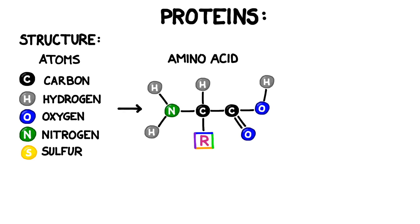These atoms arrange themselves into something called an amino acid, which looks like this. Notice how one of the carbons has an attachment called an R group. There are actually 20 different R groups that could be attached to an amino acid and they're what makes each amino acid unique. The R group is the portion of the amino acid that can sometimes contain an atom of sulfur.